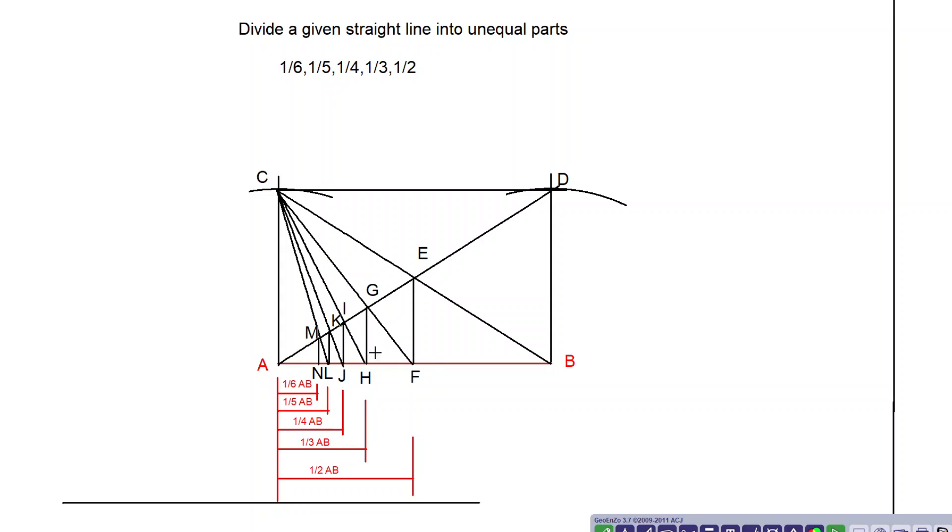So this AH is giving you a division of one-third. Then you have one-fourth, one-fifth, one-sixth. That way you can get one-seventh, one-eighth, one-ninth, whatever you want. One upon N plus one, that way.